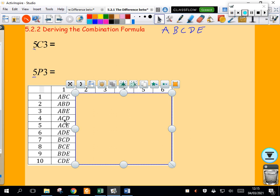There they are listed: ABC, ABD, ABE, ACD, ACE, ADE, BCD, BCE, BDE, and CDE. There are 10 different choices.